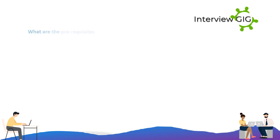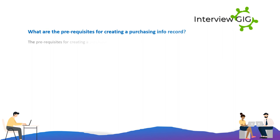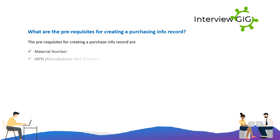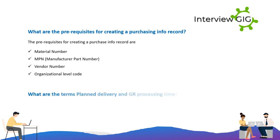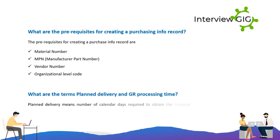What are the prerequisites for creating a purchasing info record? The prerequisites for creating a purchase info record are: Material Number, MPN (Manufacturer Part Number), Vendor Number, and Organizational Level Code.